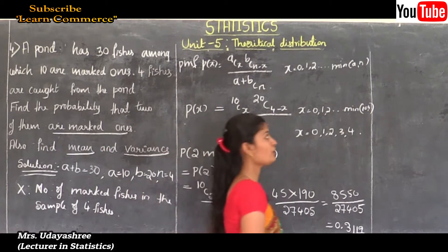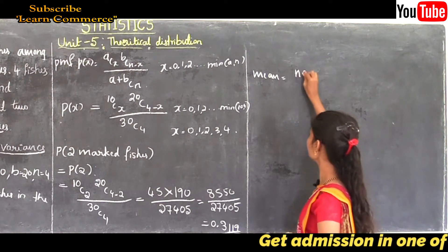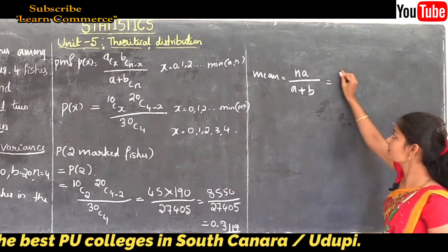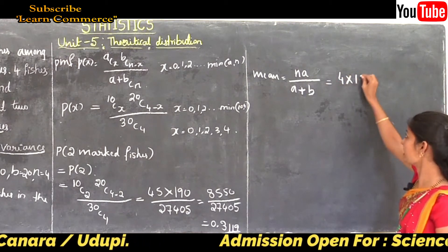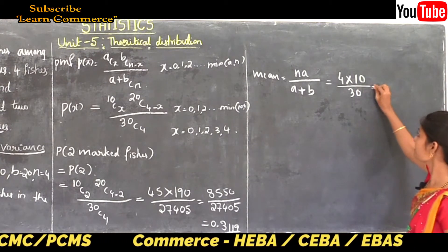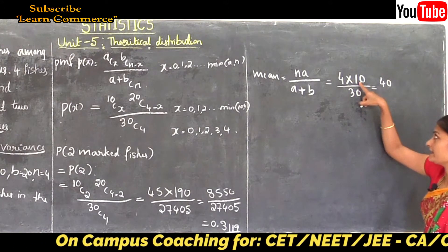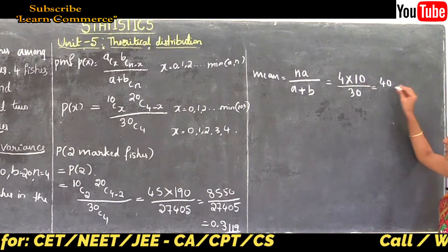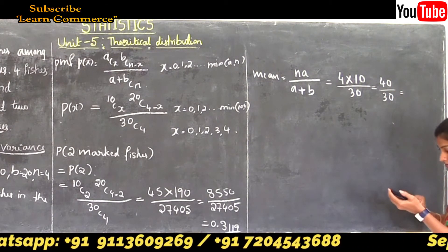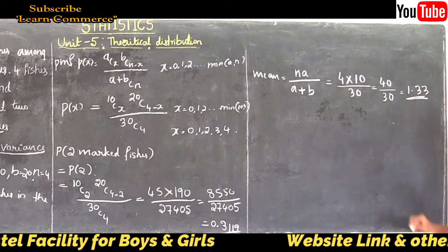Next we need to calculate the mean and variance. The formula for the mean of a hypergeometric distribution is: mean equals n times a divided by (a plus b). We have all the values: n is 4, a is 10, and a plus b is 30. So mean equals 4 times 10, which is 40, divided by 30, which equals 1.33. The mean of the hypergeometric distribution is 1.33.